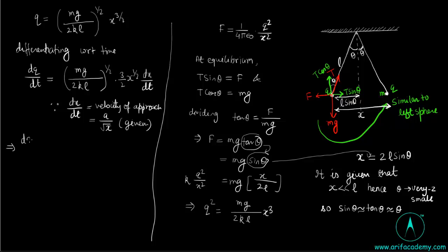dq by dt equal to Mg upon 2K L power half, 3 by 2 x raised to power 1 by 2, and into A upon root x. Now root x and root x will be cancelled out.